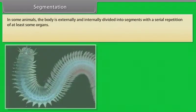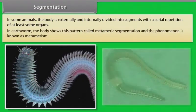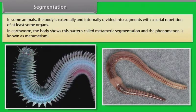In some animals, the body is externally and internally divided into segments with a serial repetition of at least some organs. In earthworm, the body shows this pattern called metameric segmentation, and the phenomenon is known as metamerism.